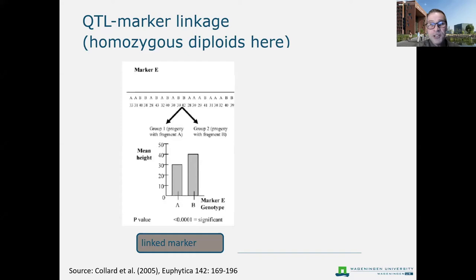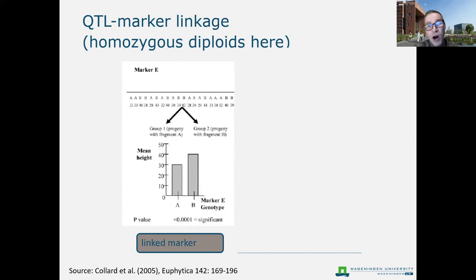This could be such a situation: we have some marker — this is a plot for just one marker — and we have a number of individuals in a mapping population, for example a double haploid population, where we have only two genotypes for the marker, denoted A and B. We group the individuals according to their marker genotype, calculate the mean for the phenotypic trait across those two groups, and if we see a statistically significant difference, we conclude that there is a QTL in the vicinity of this particular marker.